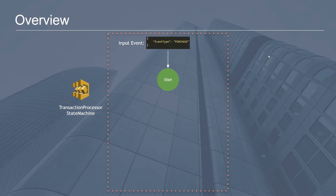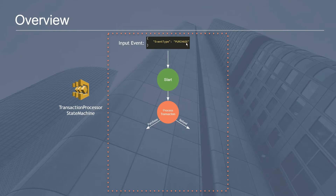That's going to be fed into the input of the state machine. One of the first decisions is going to be a choice task — a process transaction choice where we need to make a decision on which direction in the state machine we want to go. Depending on the input type, so in this case we have a purchase, we want to go in the left direction towards the purchase processor.